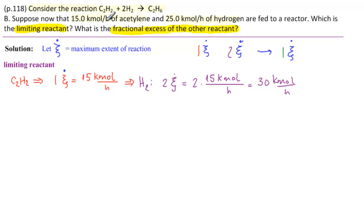And we say, we don't have that much. This is greater than what we have. So that would mean that H2 is now the limiting reactant. So this becomes the limiting reactant. And now we have to solve again for ξ. This is no good.